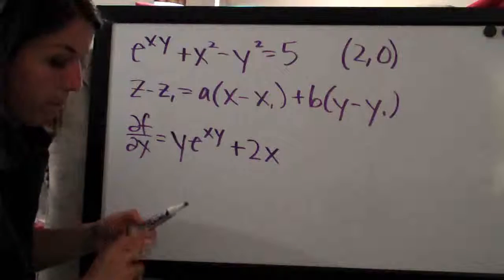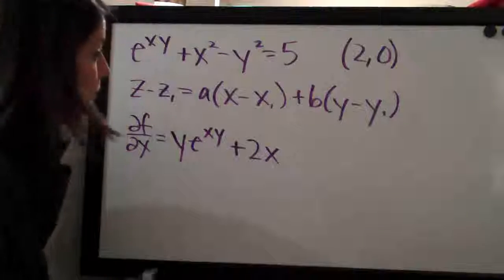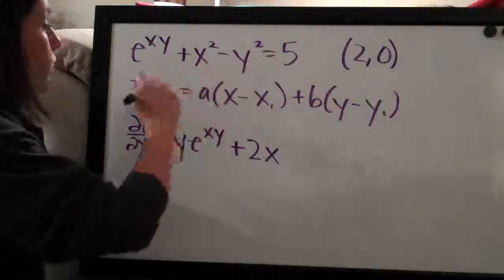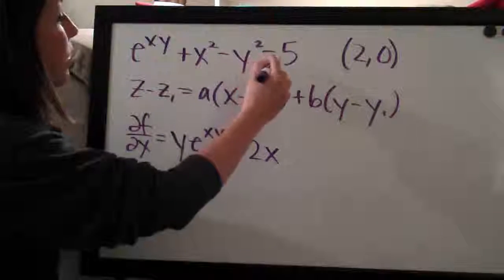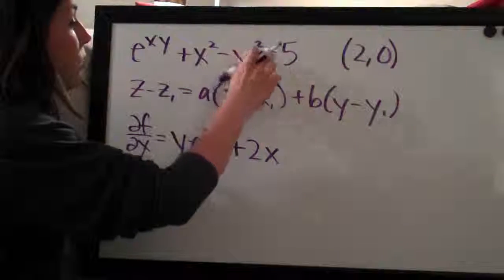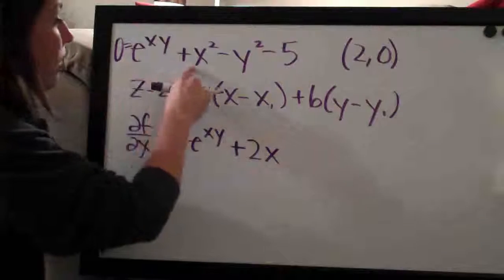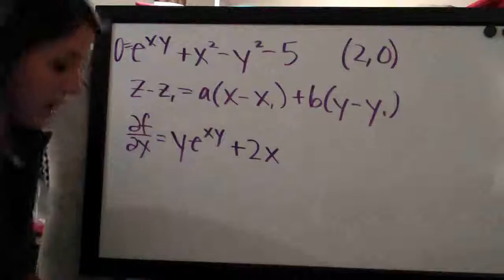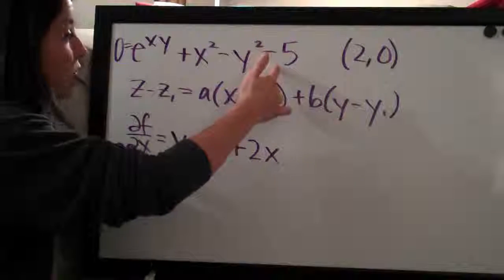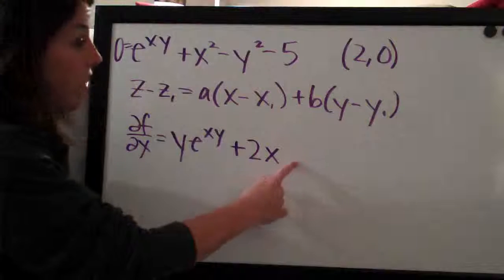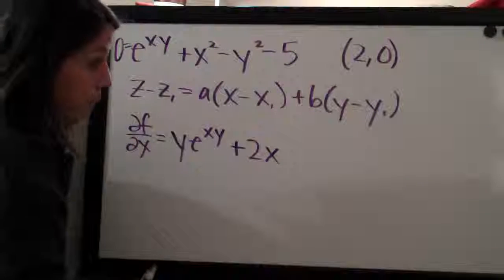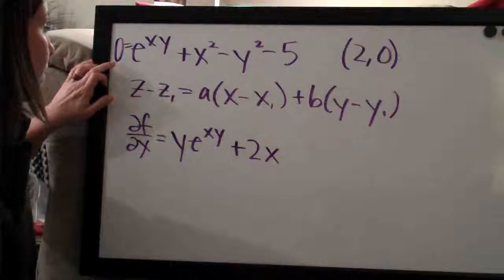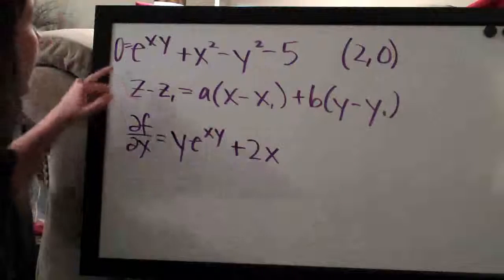I should mention: when doing linear approximation, you should first subtract 5 from both sides so the equation equals zero. That way you acknowledge the constant 5 is present when taking partial derivatives. Of course in this case it goes away since the derivative of any constant is zero, but you should always set the equation equal to zero first.